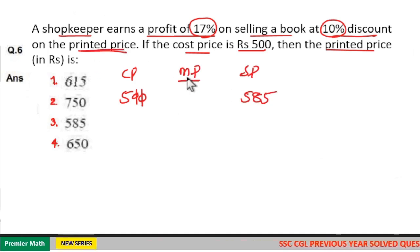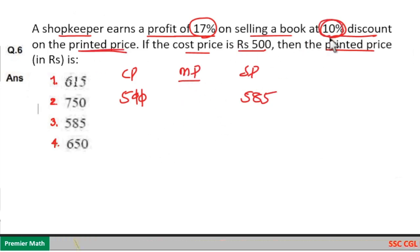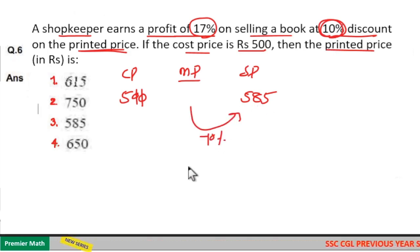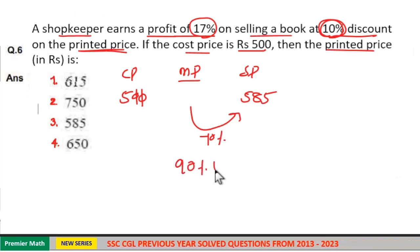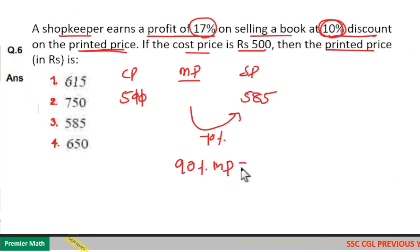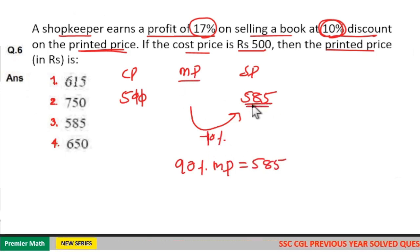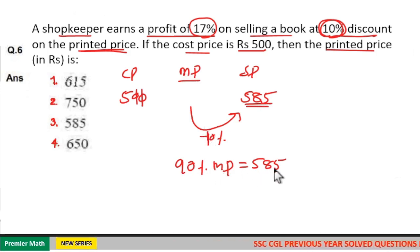We need to find the printed price, that is the marked price. The shopkeeper allows a 10% discount, so the selling price ₹585 is 90% of the marked price — because 100 minus 10 is 90. So 90% of the marked price equals 585.